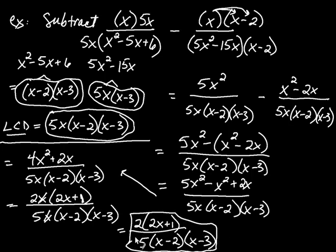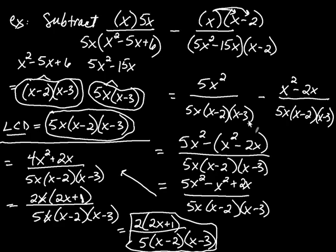That's how you add and subtract rational expressions. You find the LCD, then create equivalent fractions with that common denominator, then add or subtract the numerators, and finally simplify at the end if you can.